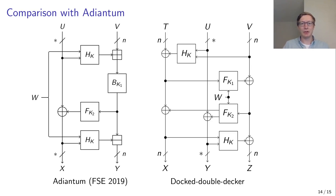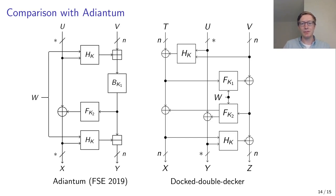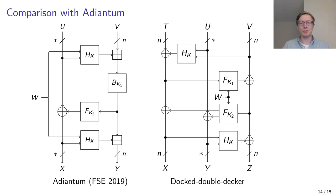Our docked double-decker construction is actually very similar to Adiantum. Starting at the bottom, the bottom two functions are called exactly the same in both Adiantum and the docked double-decker. The difference lies in the block cipher call. Because the docked double-decker splits the left lane into two parts, we are able to lay the block cipher call flat. This means we do not need the inverse of the block cipher at all, so we can replace it with a DECK function. And because we laid it flat, the top keyed hash function has to be swapped as well.